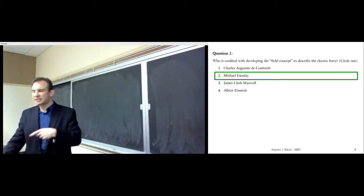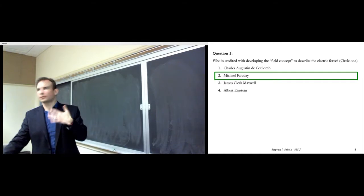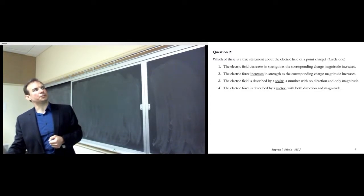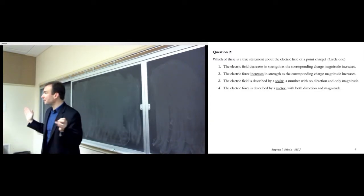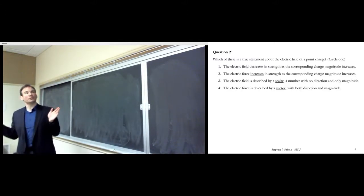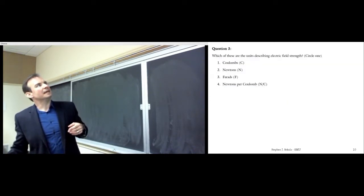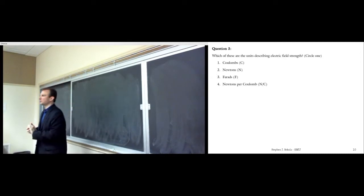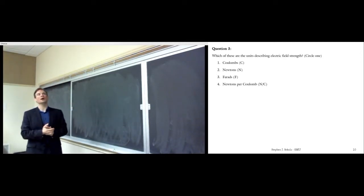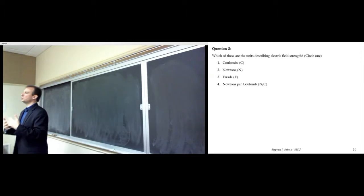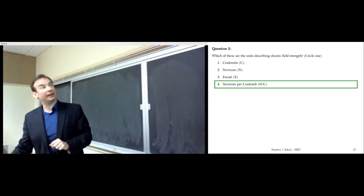Which of these is a true statement about the electric field of a point charge? The answer is four: the electric field is described by a vector. Which of these are the units describing electric field strength? Newtons per Coulomb — force per unit charge. Electric field is very useful because you don't have to know what charge is being acted upon by the field. Before we get into problem solving, let's electrocute me — how does that sound?